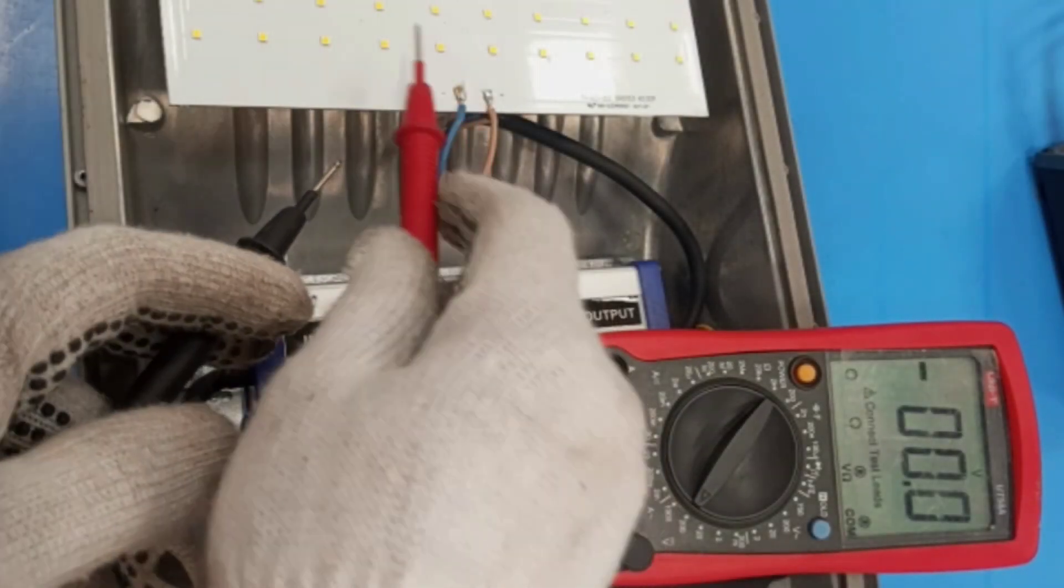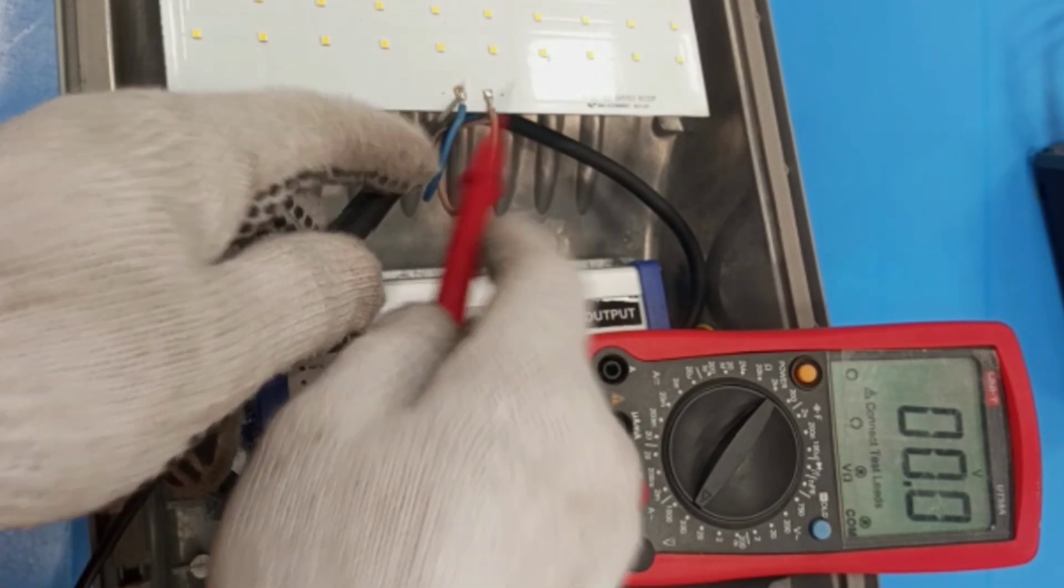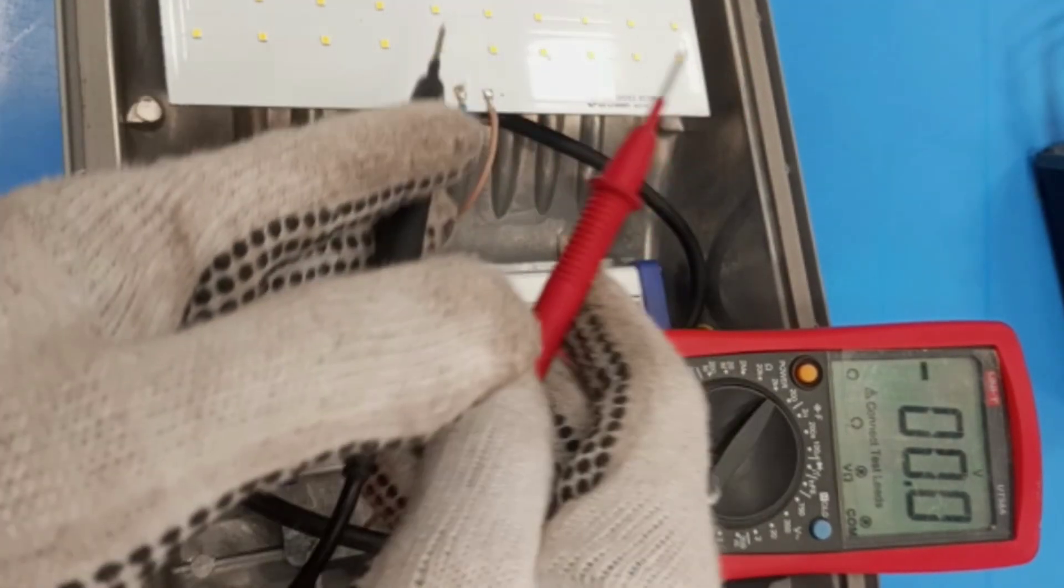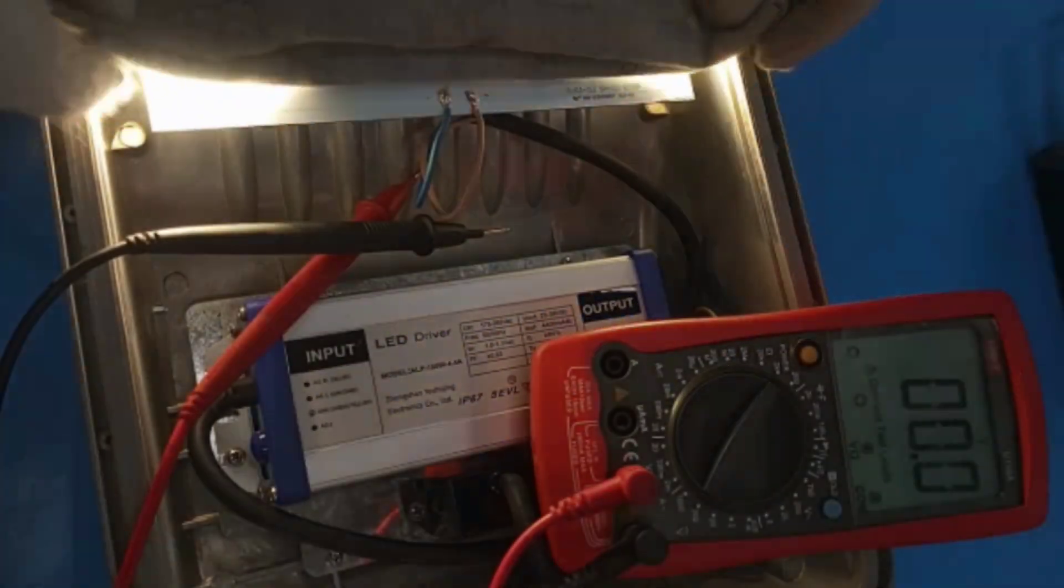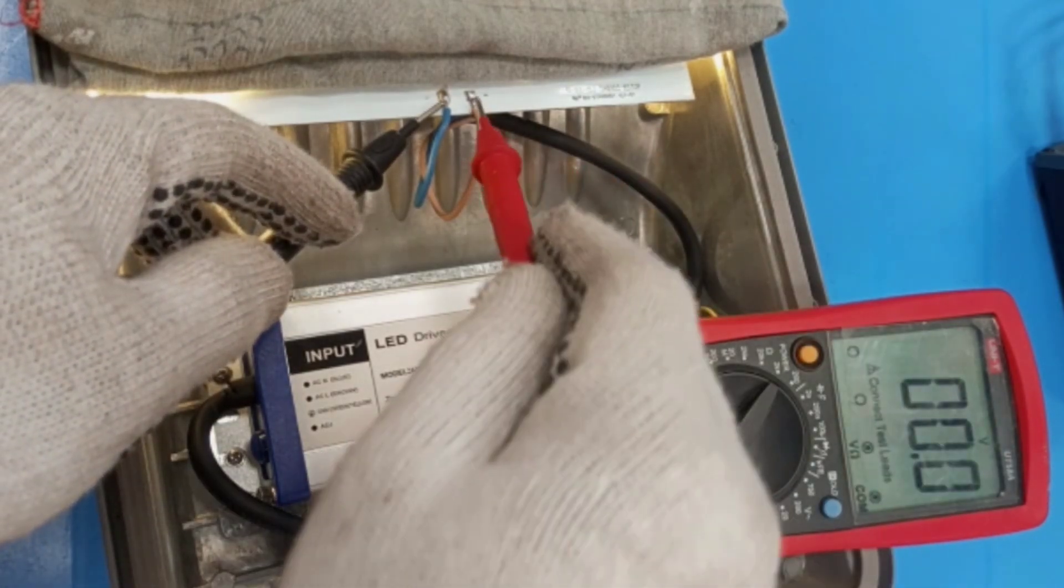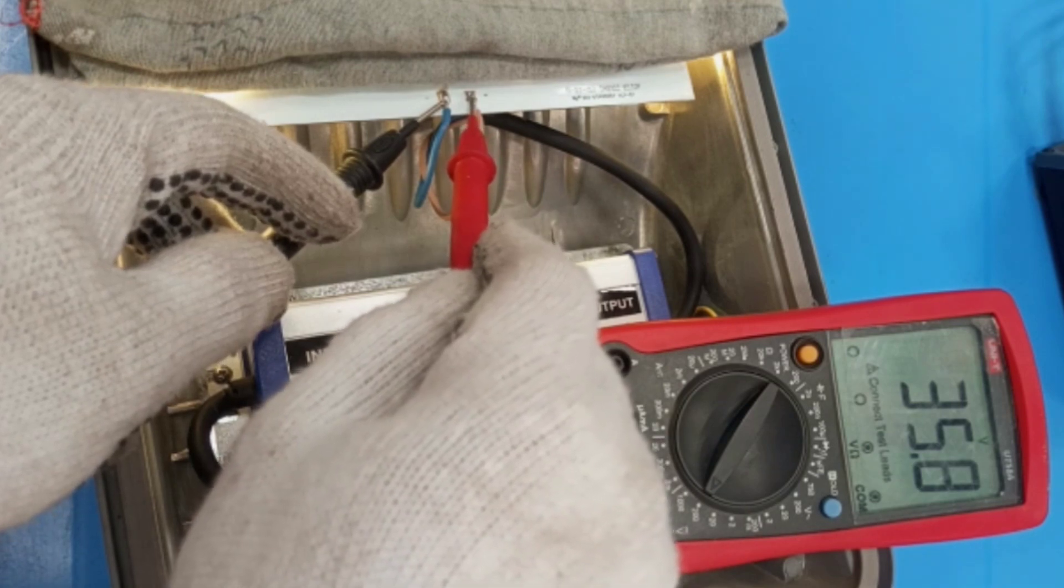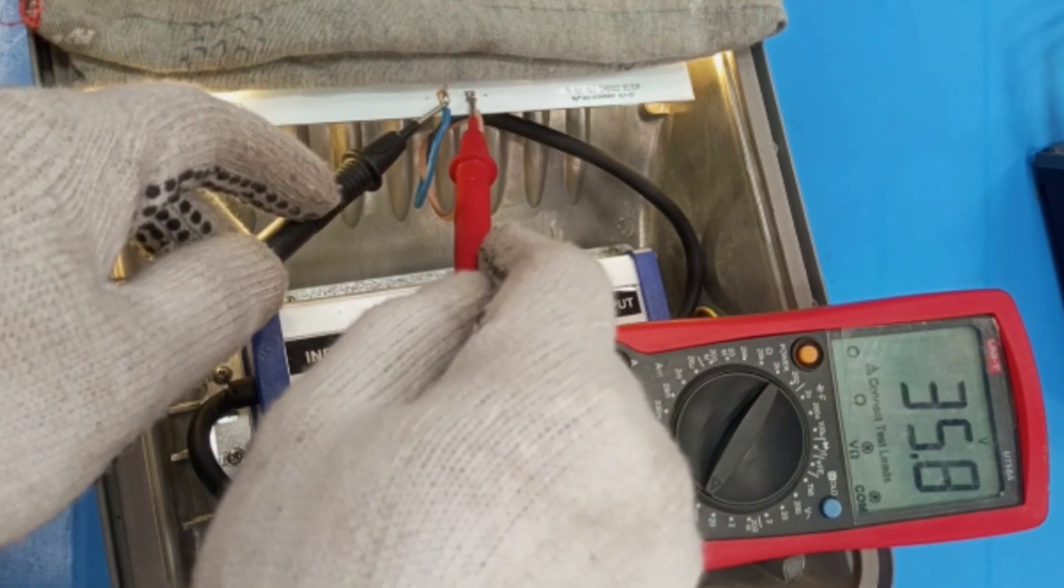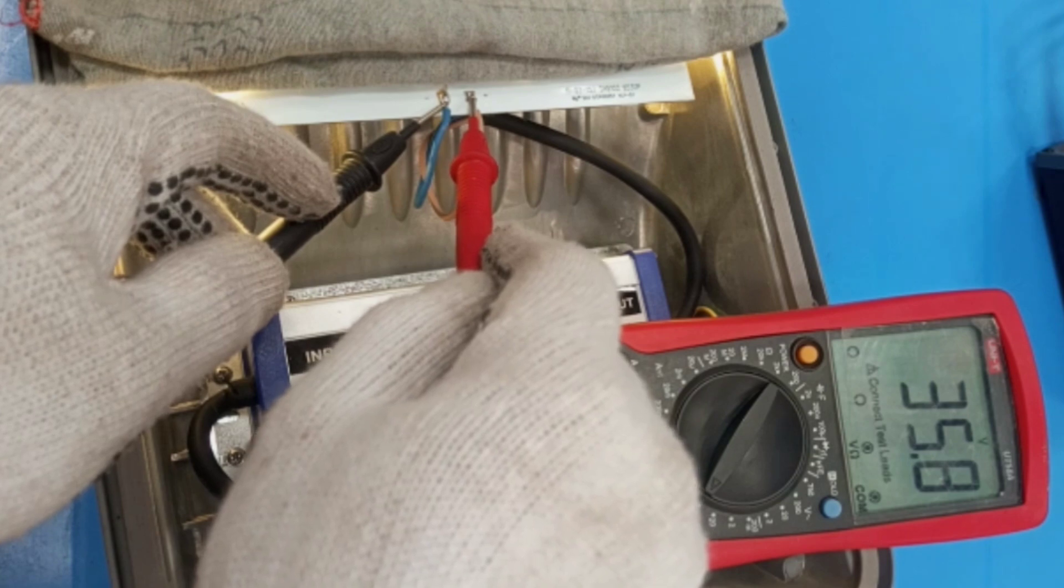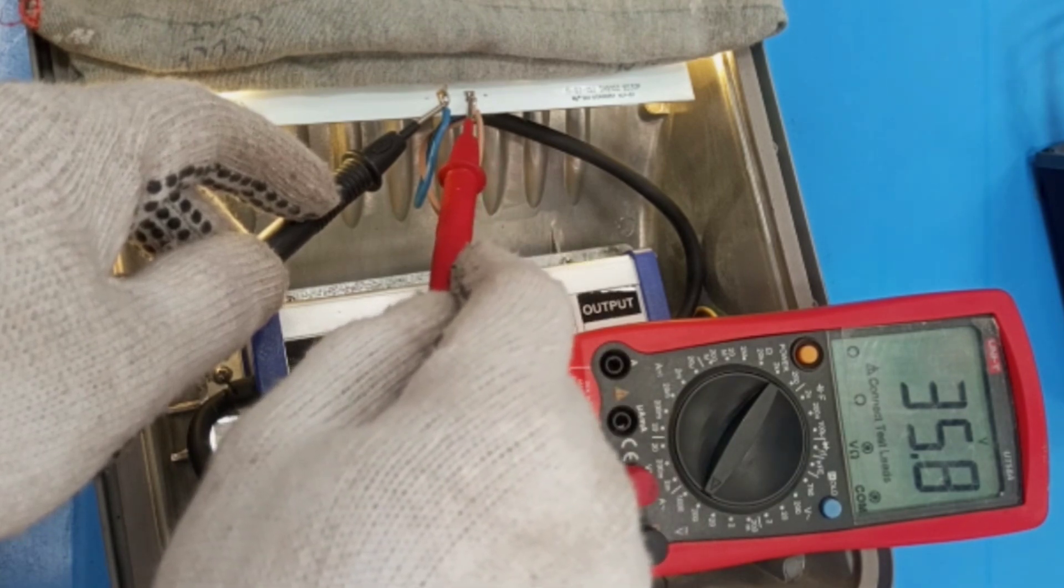This is the output to the LED module. I'm going to measure the voltage across these two lines. Before I can do that, I have to switch the lamp on. So I use the black lead to the blue wire, which is neutral, and then here. The DC output voltage to the lamp is 35.8 volts.